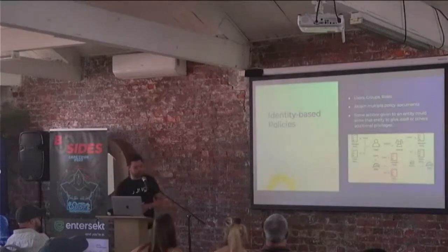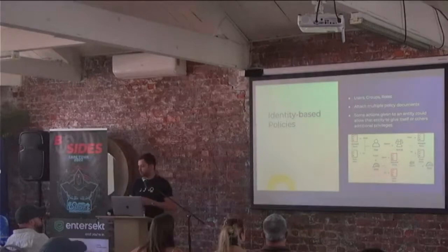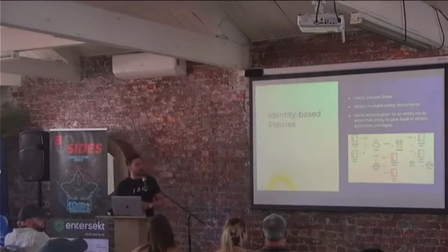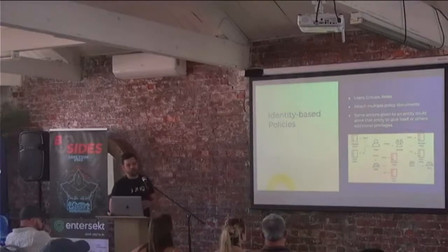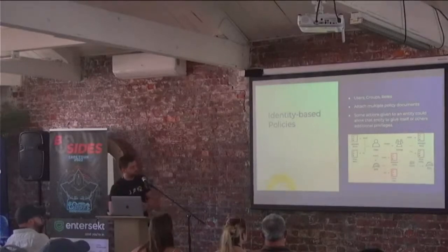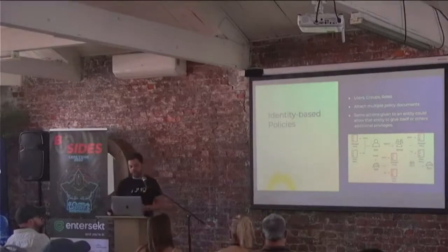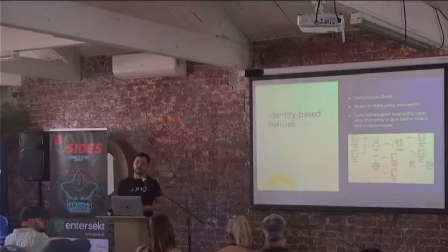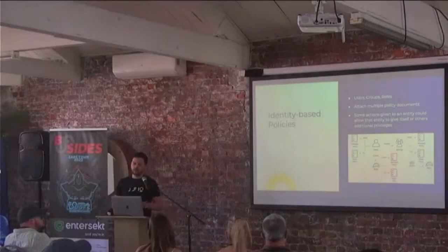Let's look at identity-based policies. These are policies attached to users, groups, and roles. Users are intended to be real human people. Groups are just a grouping of users. Roles are essentially services or users that can inherit those permissions. You can attach multiple documents to any of these, and some actions given to an entity can allow that entity to gain more permissions or give someone else more permissions, either in conjunction with other actions or just by themselves.